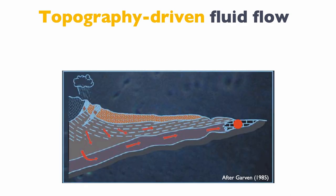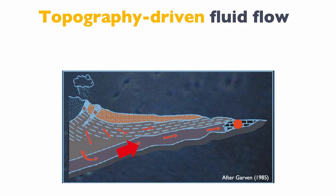Finally, we can have topography-driven fluid flow. When we have a high topography recharged with meteoric fluid, that fluid goes down and the pressure of the water column — the water head — pushes the fluid at depth laterally away from the reservoir to make space for new fluid coming in. These hotter, more saline fluids then move up following the bedding, and if they encounter limestone, diagenetic processes can happen.